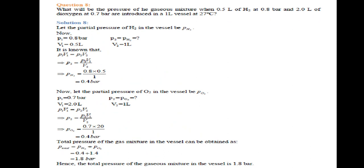P1 given is 0.8 bar, V1 given is 0.5 liters, P2 needs to be found, V2 is 1 liter. So we know P1V1 equals P2V2. P2 equals P1 times V1 upon V2, which is 0.8 times 0.5 upon 1, which is 0.4 bar.